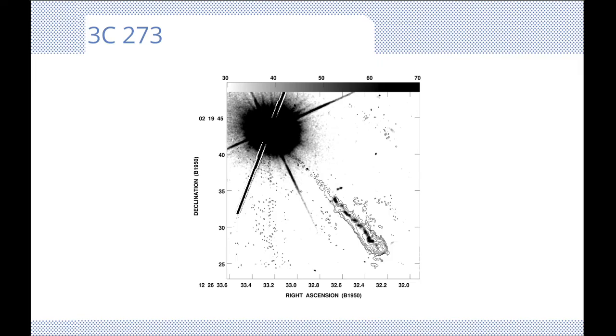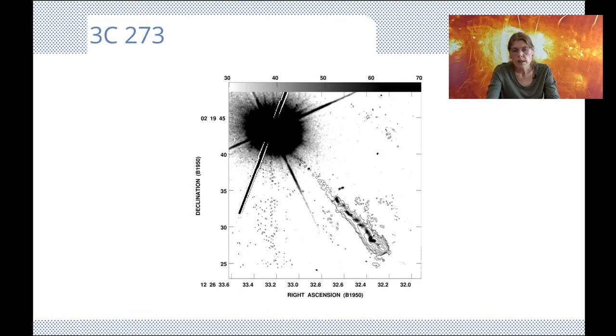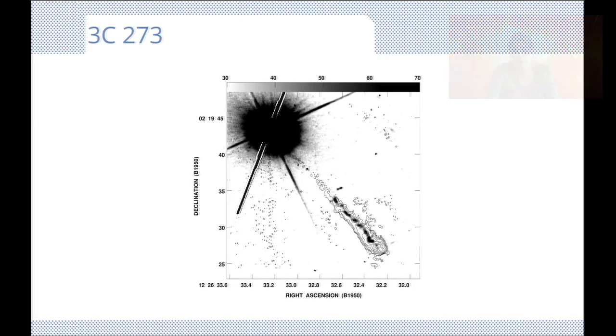Another example of a bright radio source is 3C273, a quasar. In fact, 3C273 was identified as the first quasar. These quasars appear to be radio galaxies powered by supermassive black holes that are especially active. Visible light from the region near the black hole overwhelms the starlight from the host galaxy, and makes this quasar look like a very bright star.